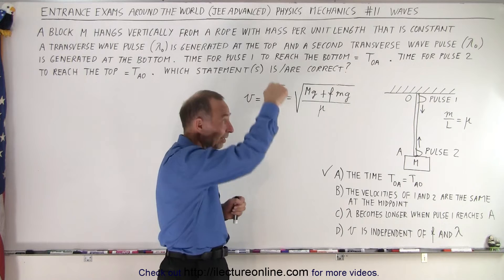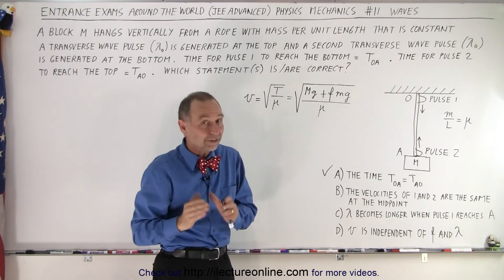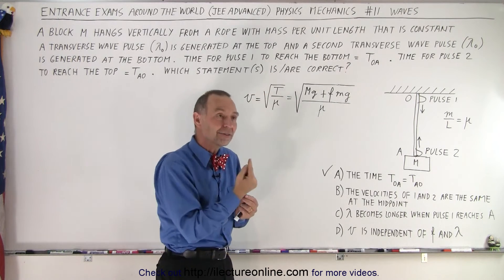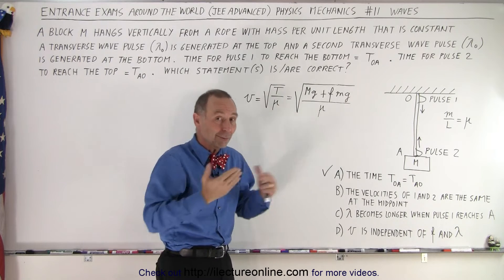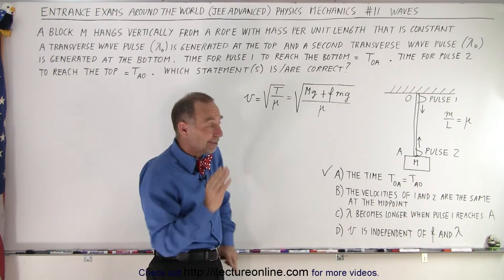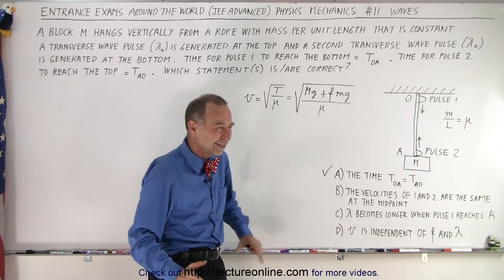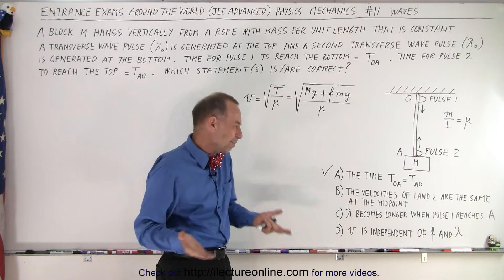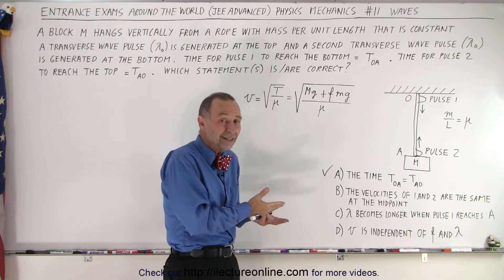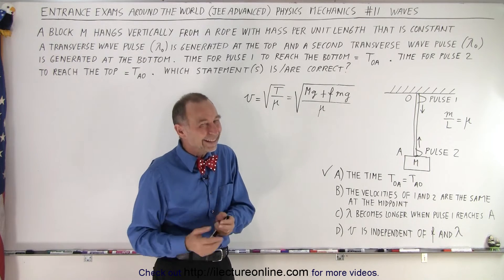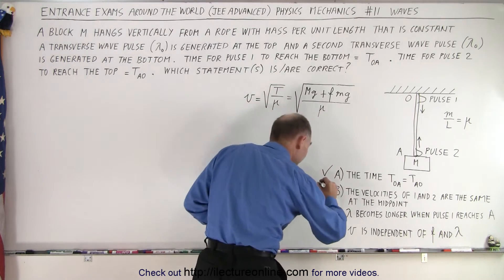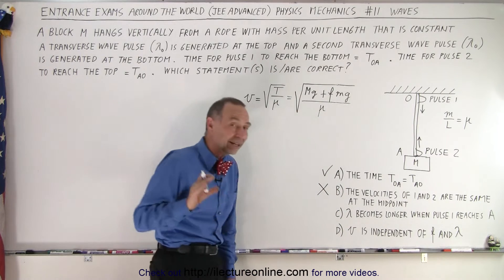For pulse one, the velocity is on the way down—that's negative velocity. For pulse two, it's a positive velocity. Since one is negative and the other one is positive, they're not the same. The correct answer is no, B is not the correct statement. But I thought that was pretty tricky, because velocity, the magnitude of velocity, is indeed the same. But technically speaking, they are correct—B is not a good answer.